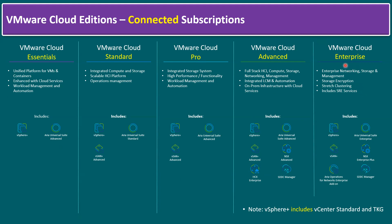VMware Cloud Enterprise adds additional services on top of VMware Cloud Advanced — specifically NSX Enterprise Plus and Aria Operations for Network Insight. A key point: wherever vSphere Plus is mentioned across all editions, it includes vCenter Standard and TKG (Tanzu Kubernetes Grid), meaning enterprise-grade Kubernetes is available with all VMware Cloud Editions.